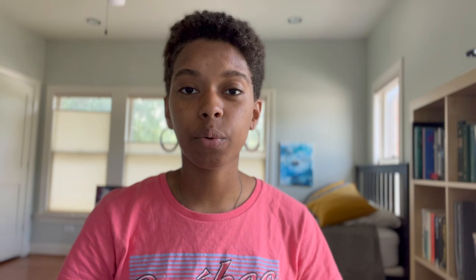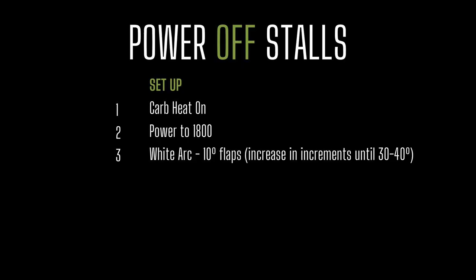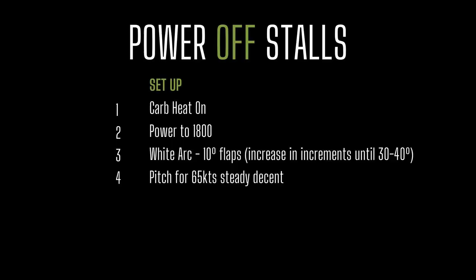For a power off stall, the setup is going to be a little different, though the recovery will be mostly the same. This time, flaps are involved. Carb heat on — you need that carb heat on because you are pulling the power back. Carb heat on, power to 1800, and now you are going to start working the flaps. Wait until your airspeed gets into the white arc, put 10 degrees of flaps in, and continue adding flaps in increments until you are at full flaps. Once at full flaps, pitch to get that airspeed to a regular descent of 65 knots.